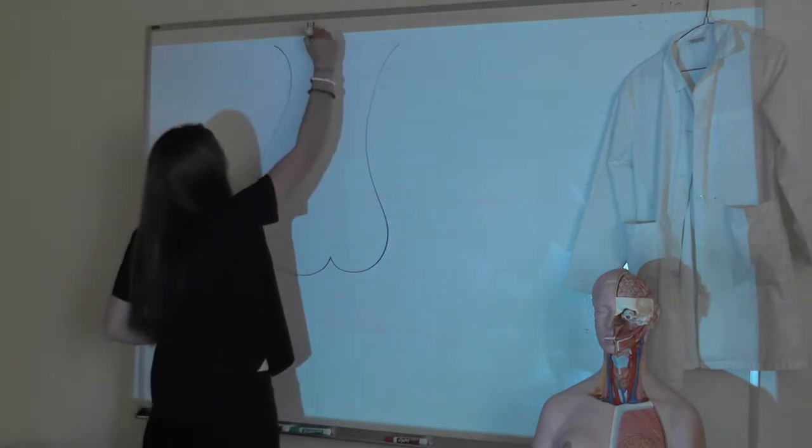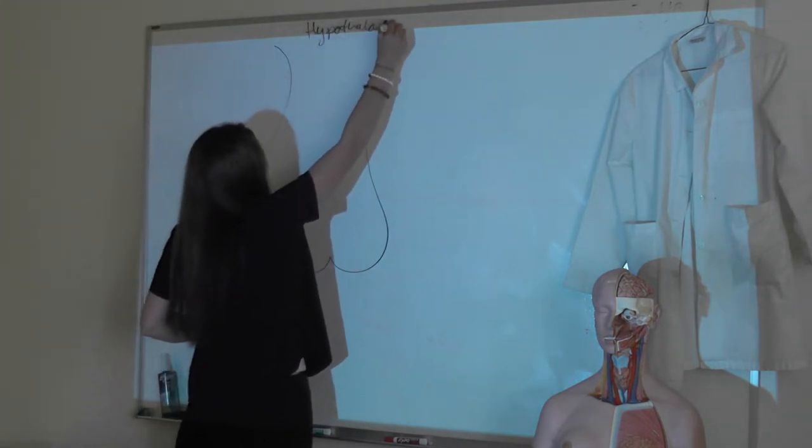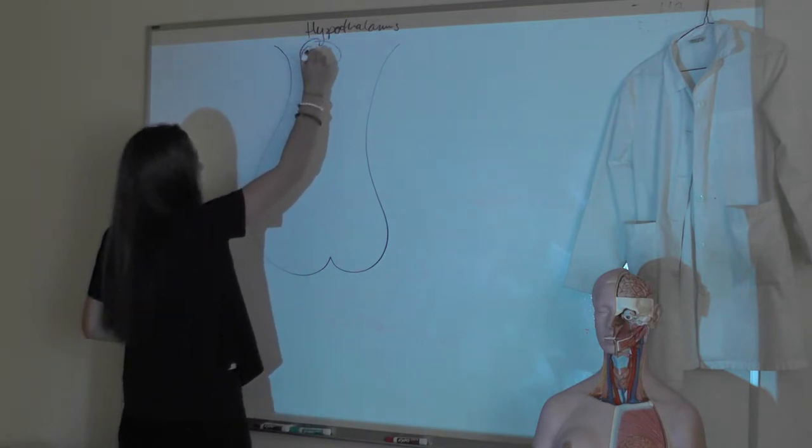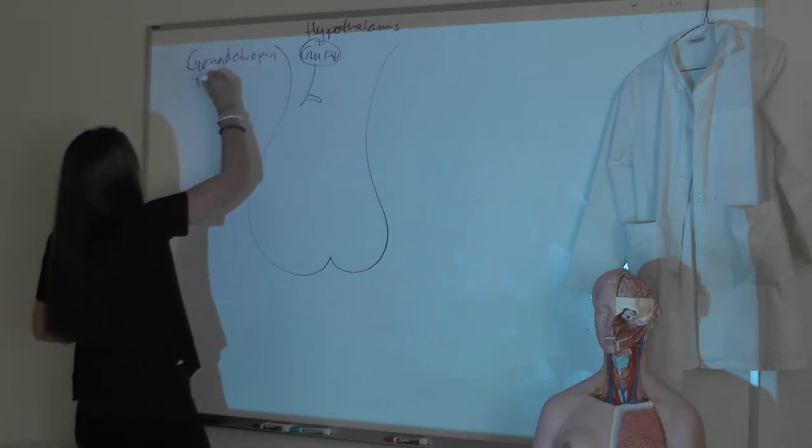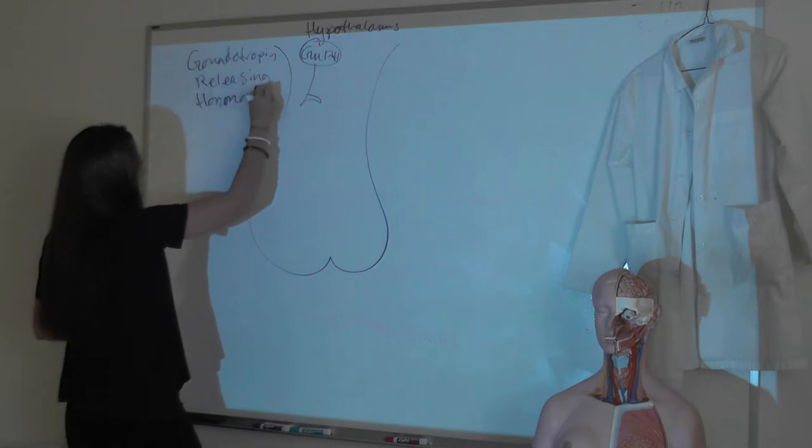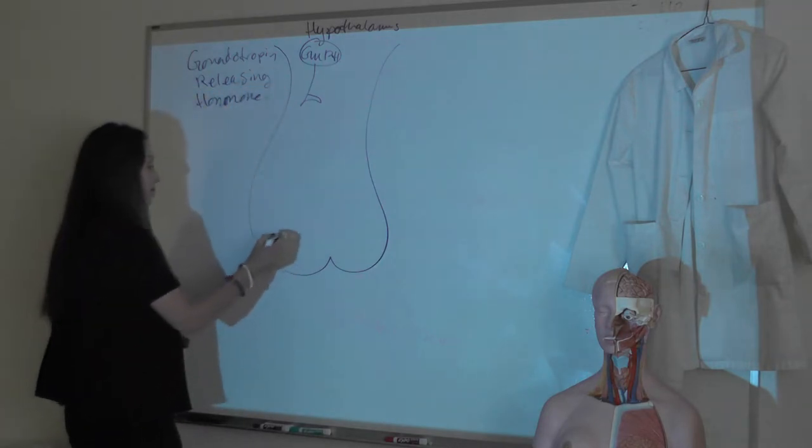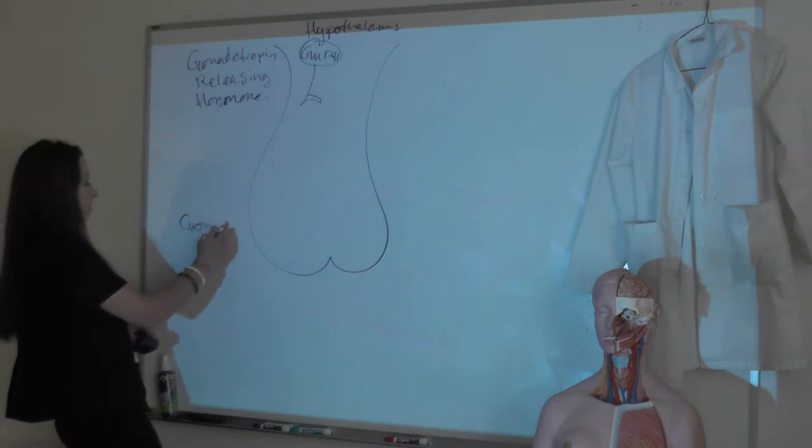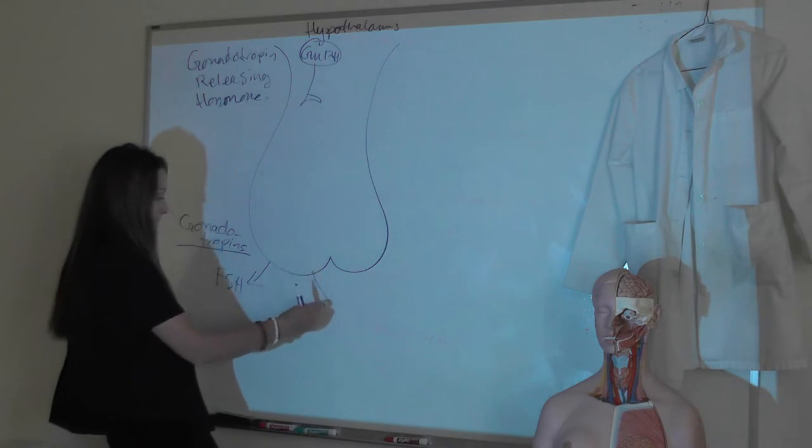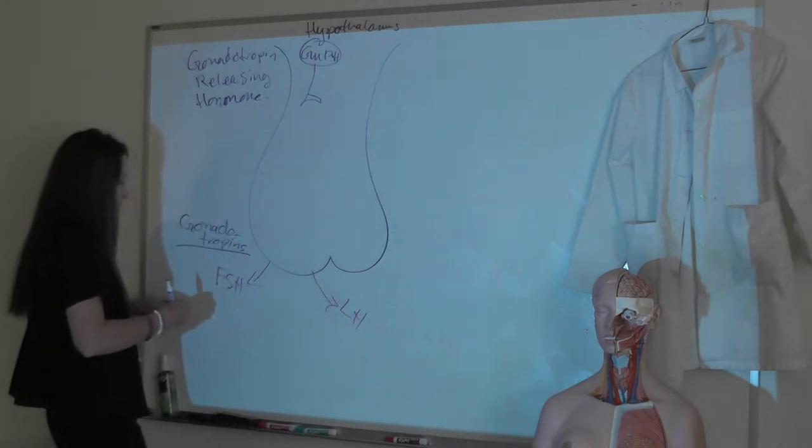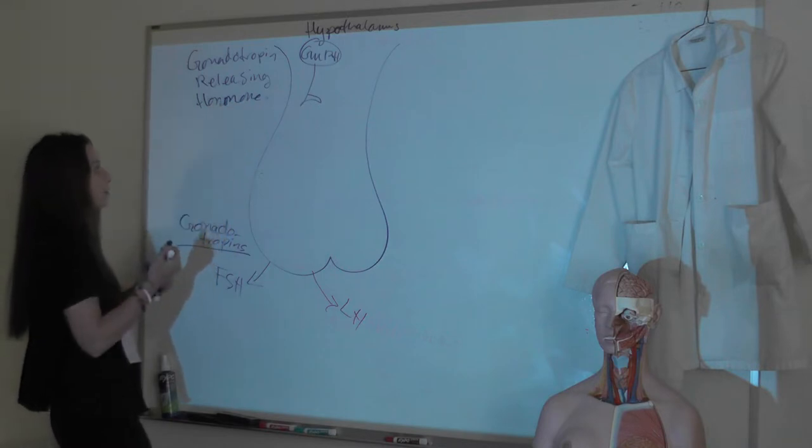The HPG axis in males starts up here in the hypothalamus, where we have neurons that produce the releasing hormone GnRH, the gonadotropin releasing hormone. This name tells you exactly what it does - it stimulates the release of gonadotropins. The gonadotropins are these two hormones, FSH and LH, that come from the anterior pituitary.